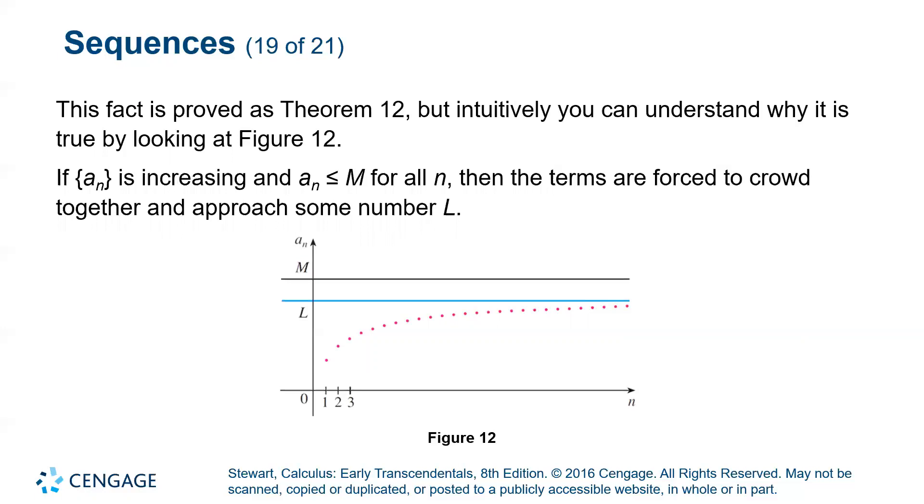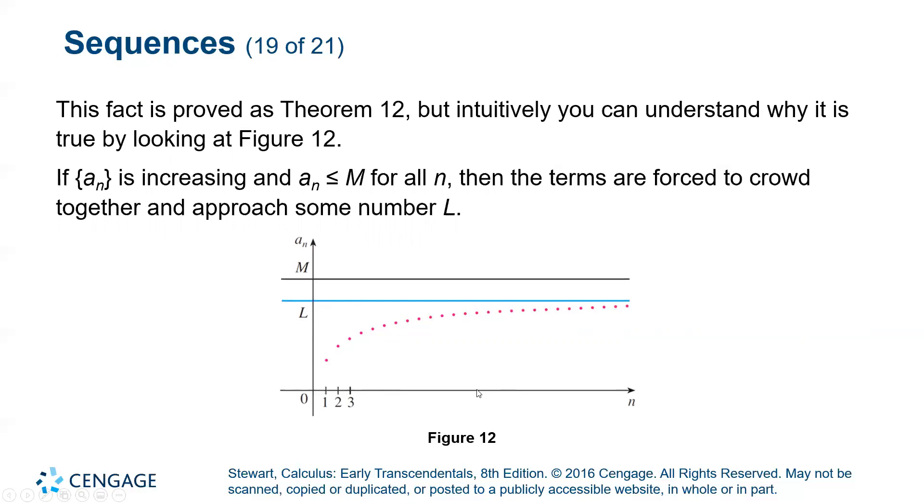Okay, so here's sort of a picture of that. Let's see. We have a sequence that is growing but is bounded above by L, right? It's strictly increasing. So it's monotonic and it's bounded above by L and below by zero, for example. And thus, it must be convergent.